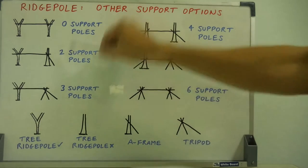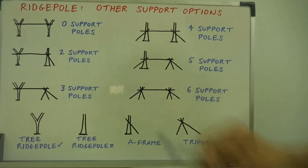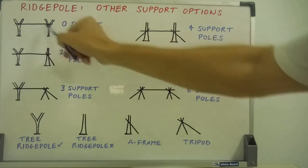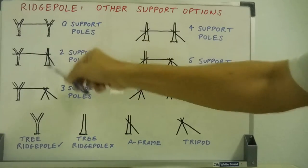So there's a few options for supporting a ridge pole. You can't always have handy trees. They're around eight feet apart, thereabouts is a good distance, like I keep saying. So there's your options.